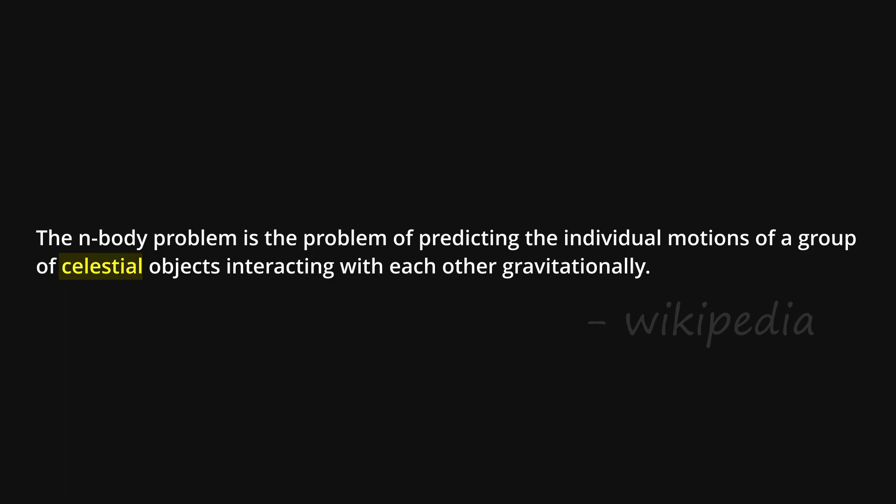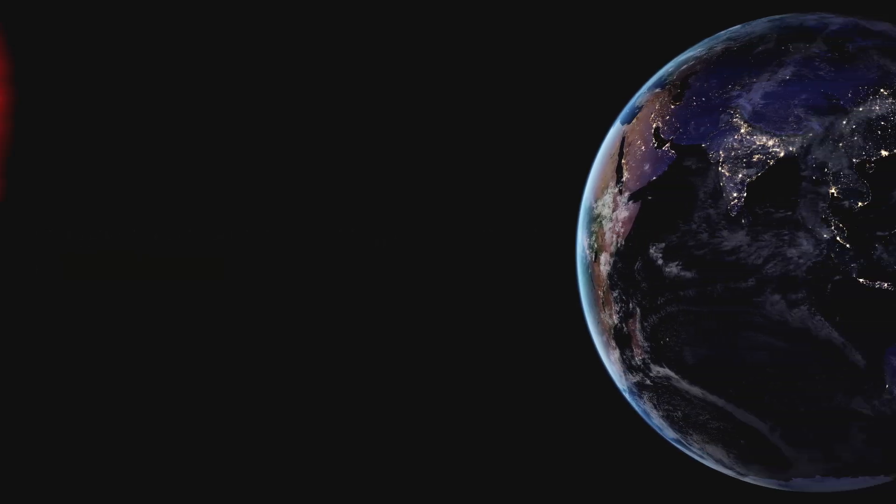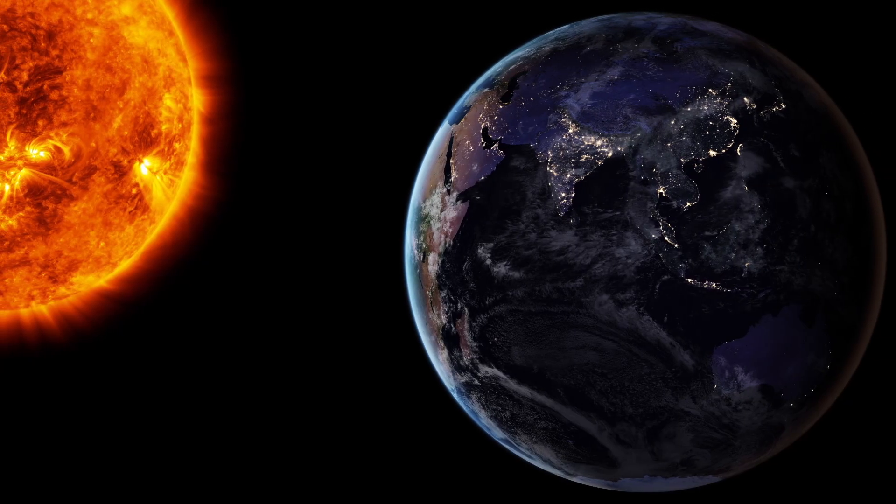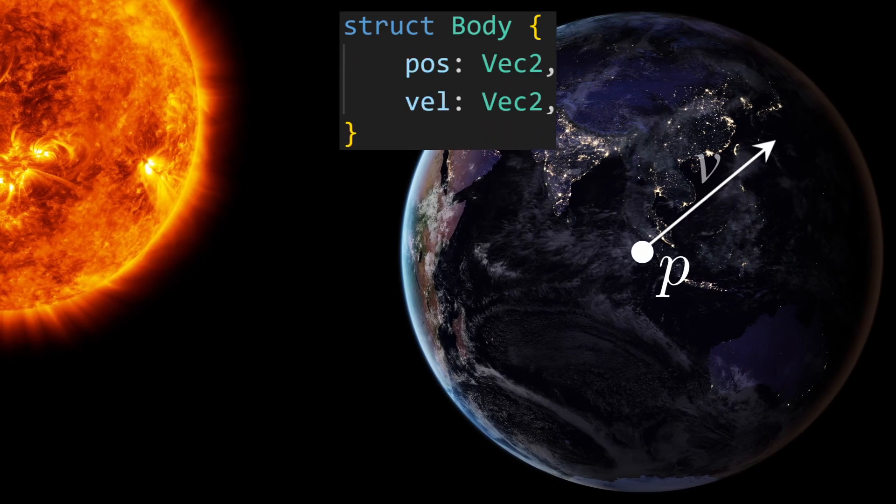Let's begin by defining what a celestial object is. Every celestial object, or let's call them body, will be a position in space with some velocity, acceleration, and mass.